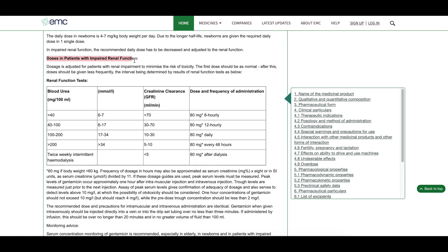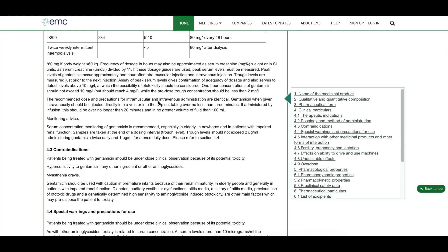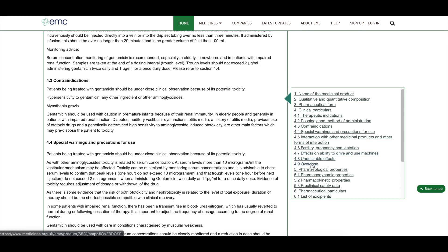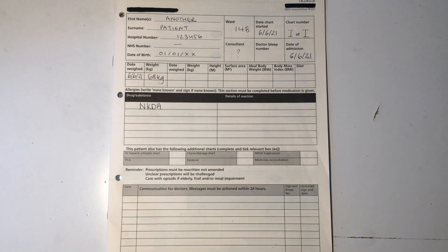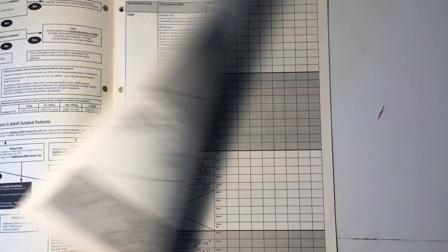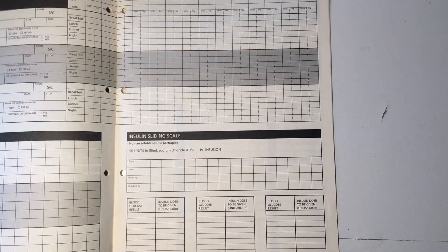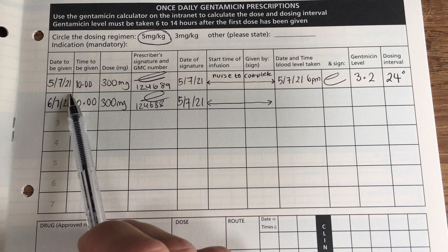So, this will differ in different countries and different trusts, so make sure that you check your own trust's guidelines. But in my case, gentamicin levels are checked 7 to 14 hours after the dose administration, and based on that level, you will be able to re-prescribe when the next dose should be given to make sure that it's not toxic for the patient. This may all sound very confusing, but I'll just show you. So, as you can see at the top of the page, there is the dosing regimen, and I'll show you how to calculate that.